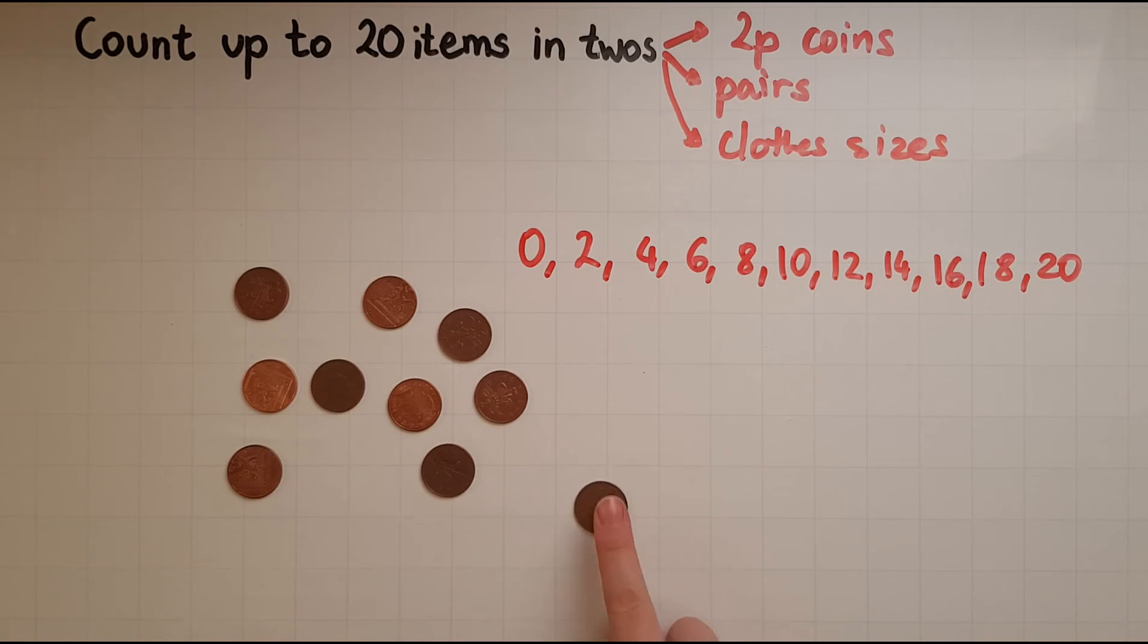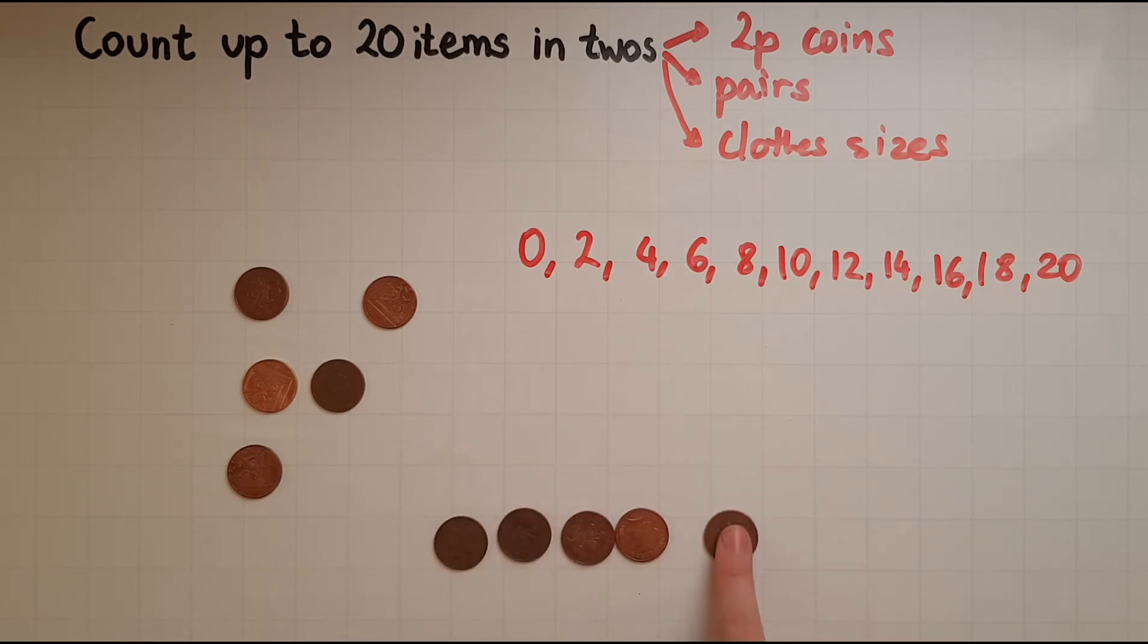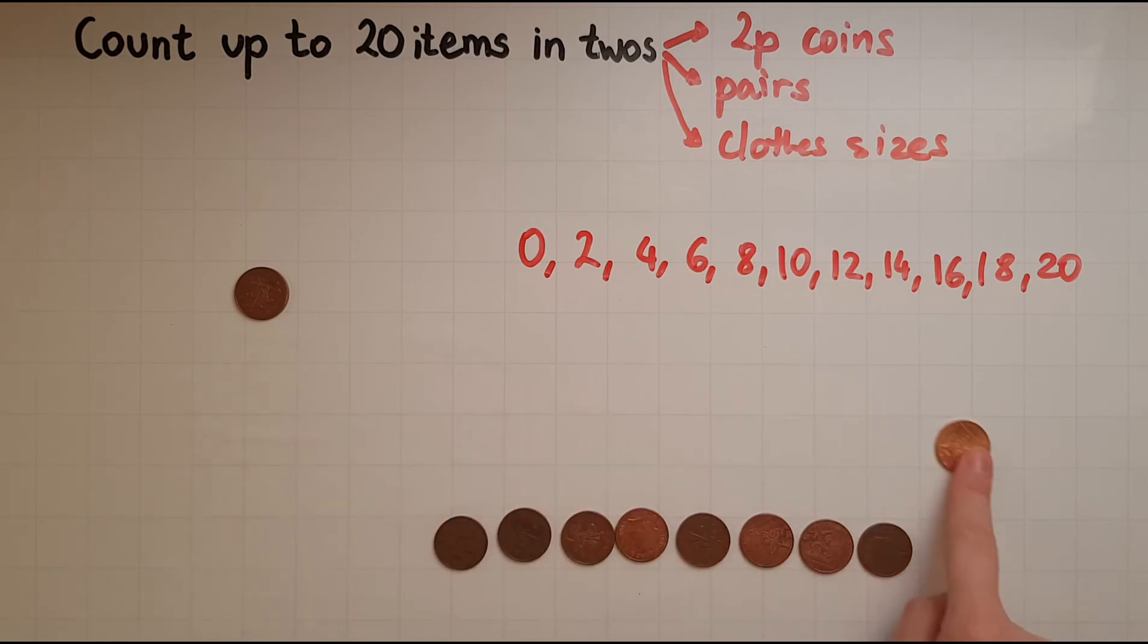going 1, 2, 3, 4, 5, 6, 7, 8, 9, 10, 11, 12, 13, 14, 15, 16, 17, 18, 19, 20. So there are two ways that I could do this. However, the first one where I went up in twos, which is 0, 2, 4, 6, 8, 10, 12, 14, 16, 18, 20, is much easier and helps...